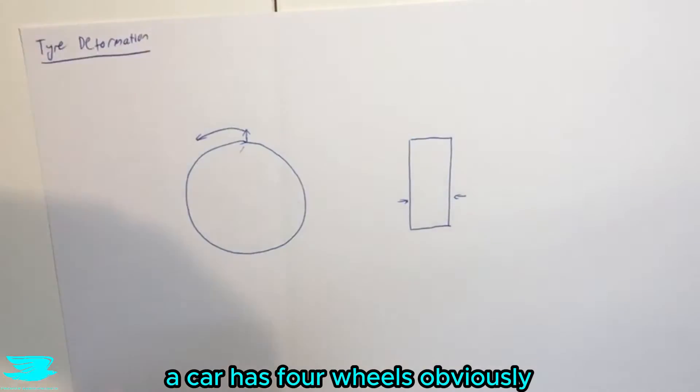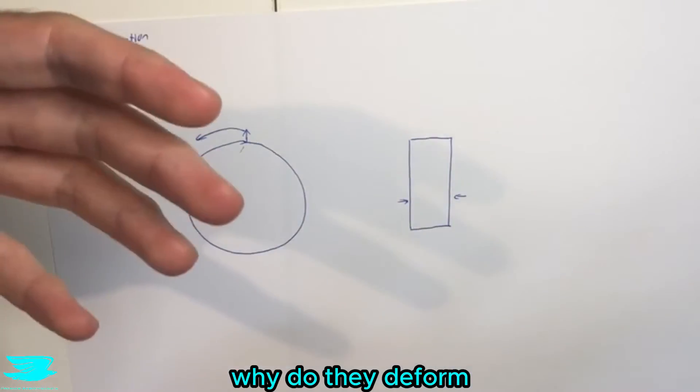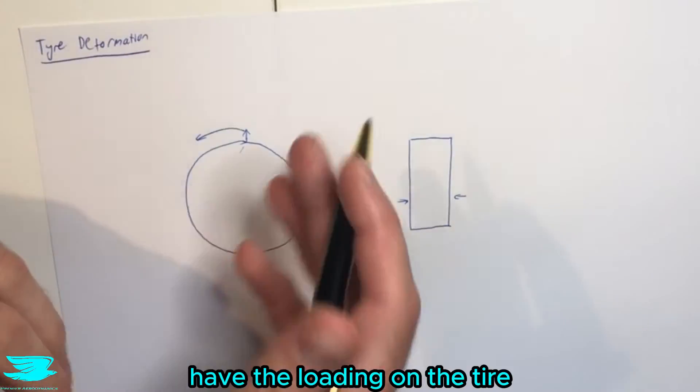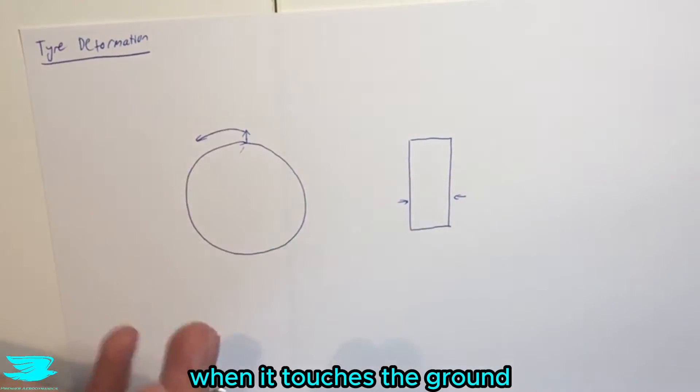So a car has four wheels obviously, and how do these tires deform? Why do they deform? Well, not only do we have the loading on the tire which then affects the bulge here when it touches the ground,